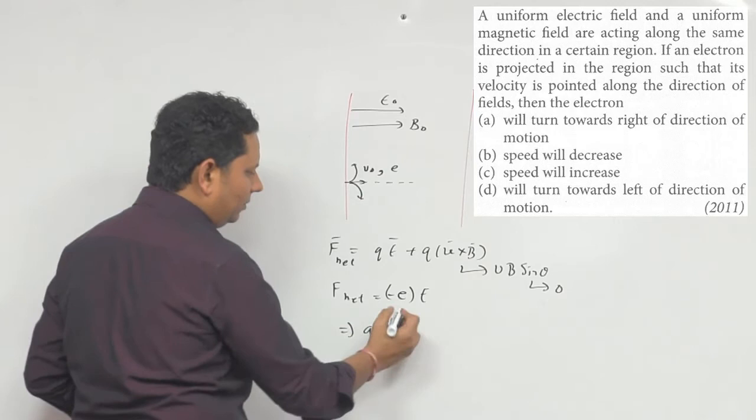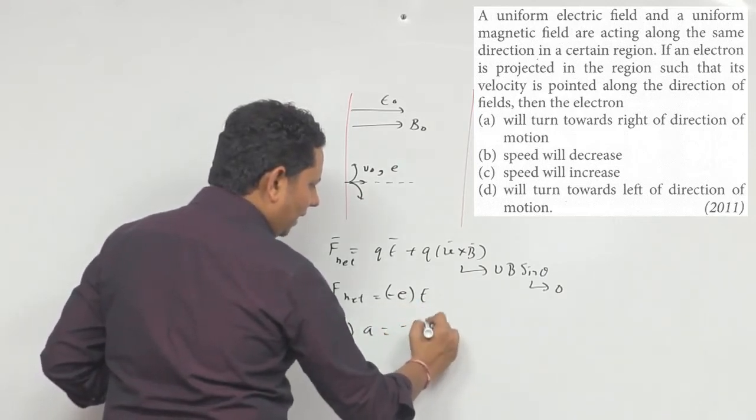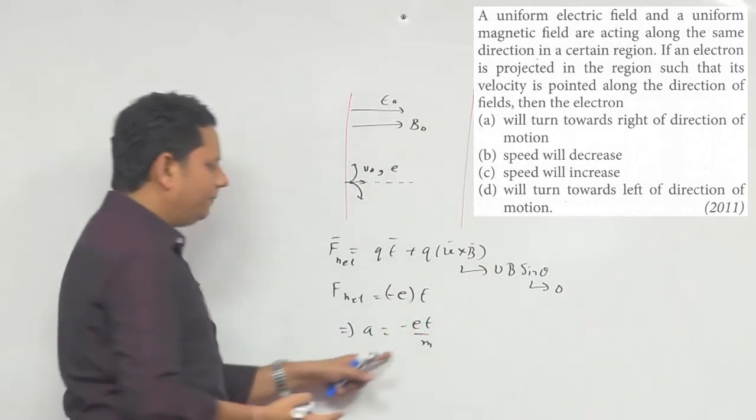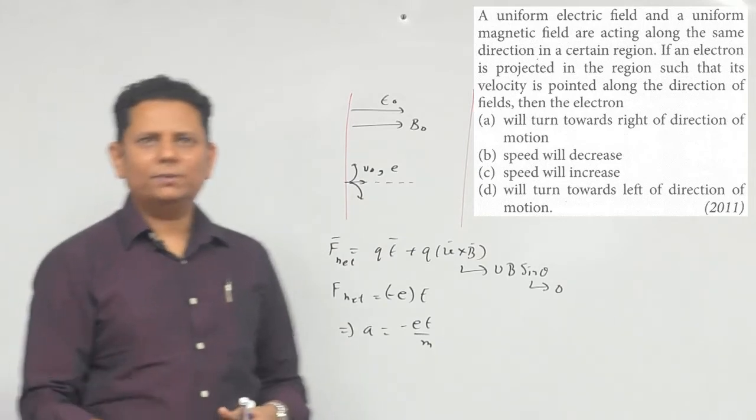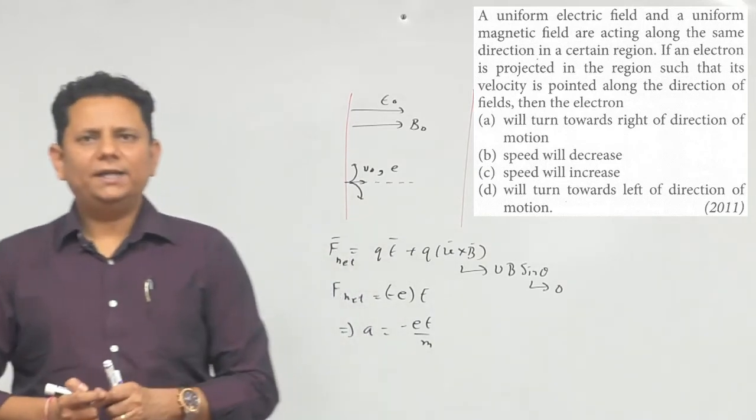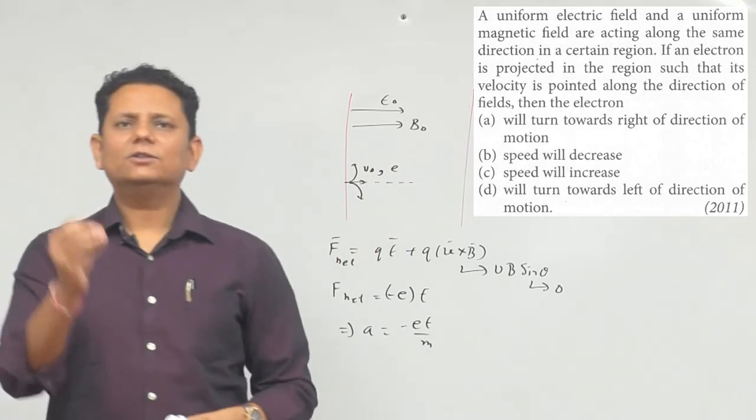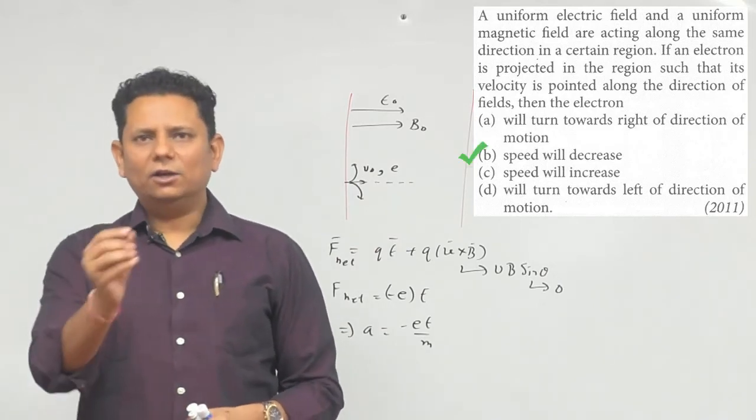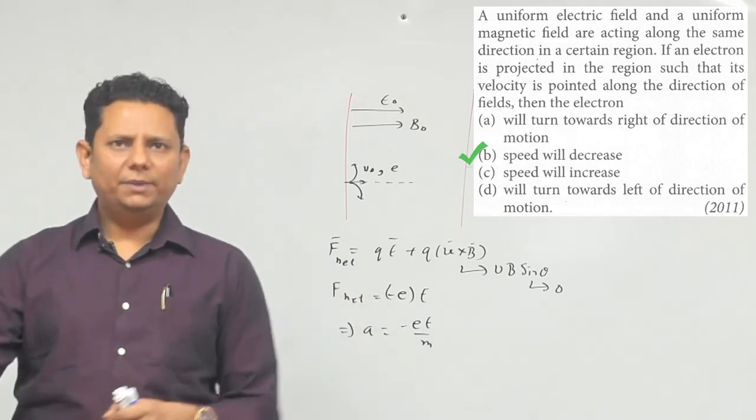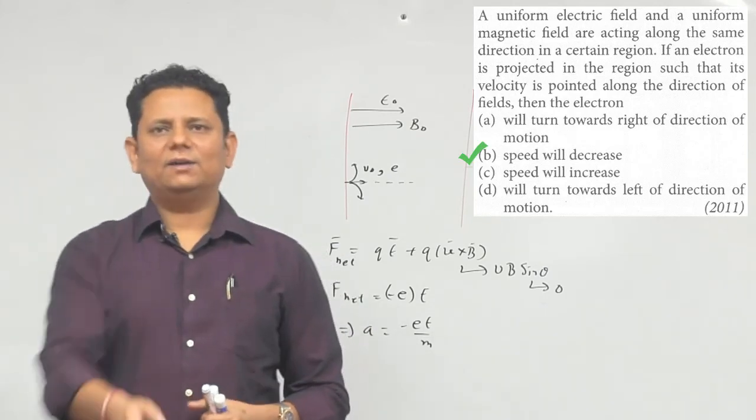If you look at acceleration value, it is minus EE by M, which implies that you have a speed of electron with initial V0 velocity, which means that your speed will decrease. So option number B, speed will decrease would be the right answer.